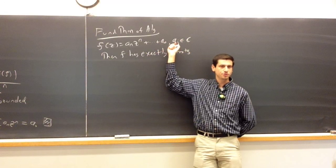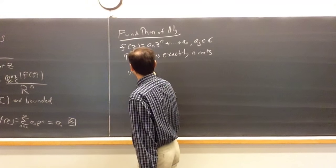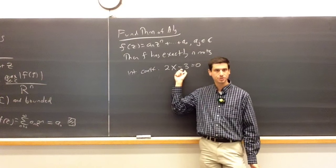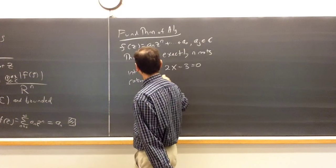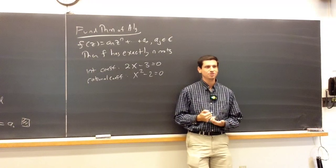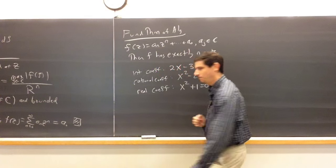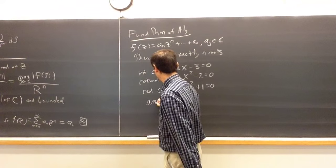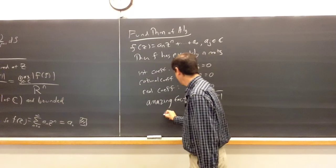This is an absolutely amazing result. If we looked at a polynomial with integer coefficients, you don't have to have n integer roots — consider 2x minus 3 equals 0. What about rational coefficients? Consider x squared minus 2 equals 0 — no rational roots. What about real coefficients? x squared plus 1 equals 0 — fails again. In all these situations things fail violently. The amazing fact: add i, the square root of negative 1, and all is good.